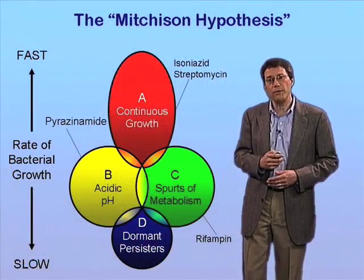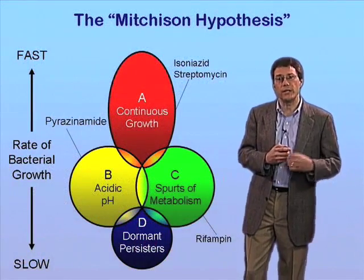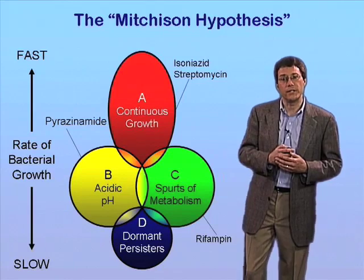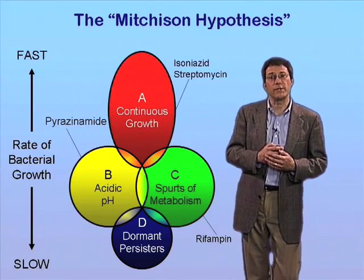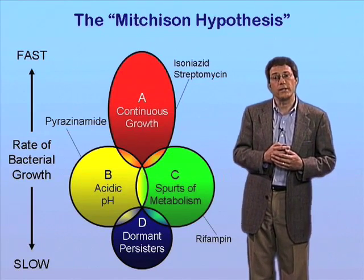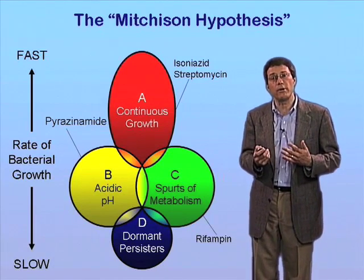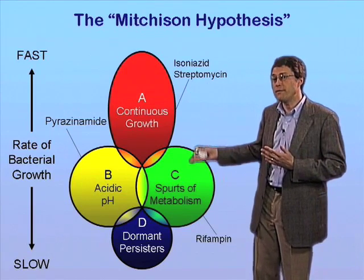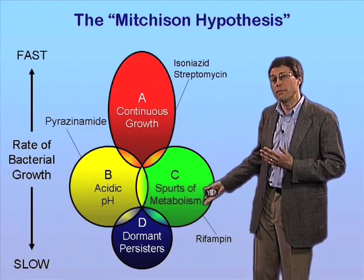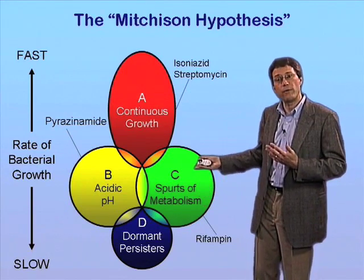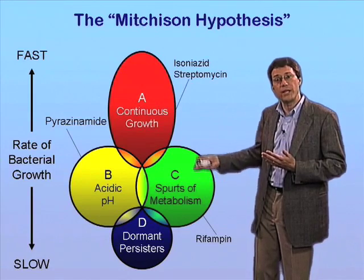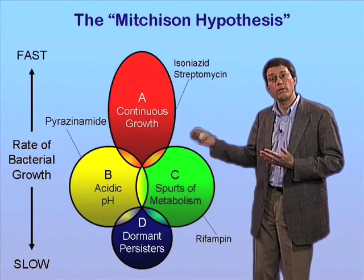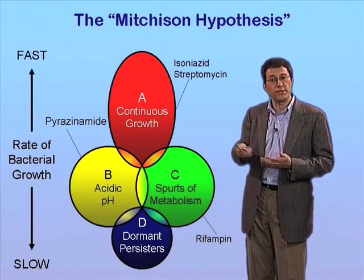I'll remind you that we discussed in the last talk the Mitchison hypothesis, which has been with us for some time, proposing that TB chemotherapy is problematic because the bacteria inhabit different tissue compartments and therefore adopt different physiologies that make them refractory to one or more anti-TB drugs.